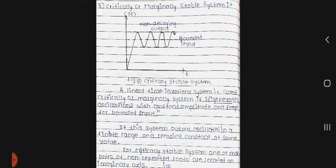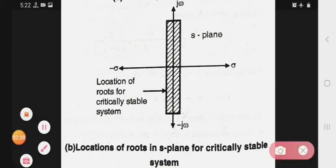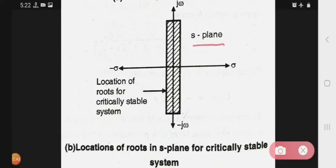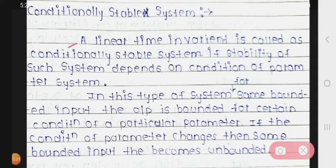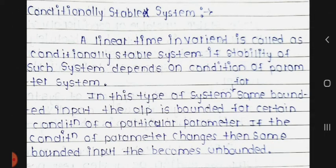We also see the location of roots in the S-plane for a critically stable system. The next type is the conditionally stable system. A linear time invariant system is called a conditionally stable system if the stability of the system depends on the conditions of a parameter.